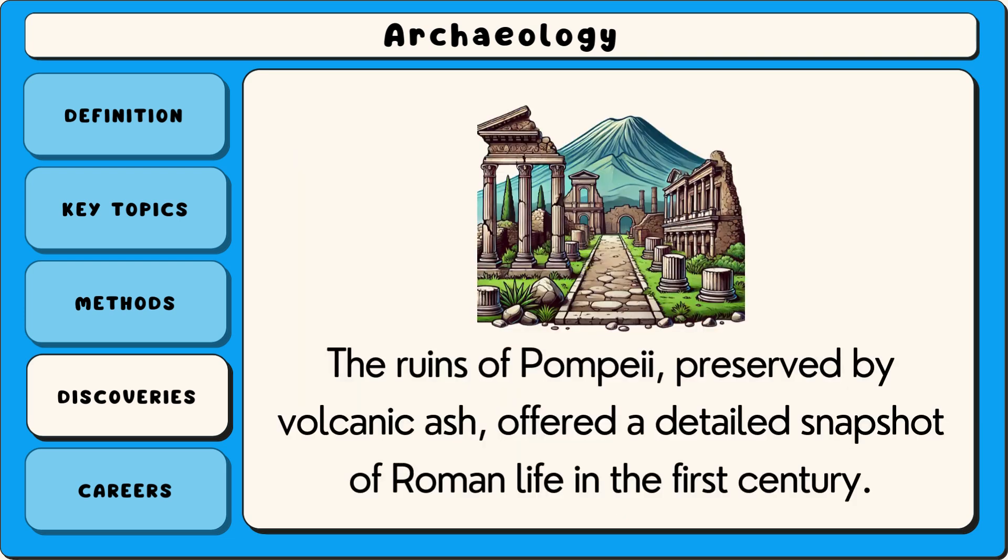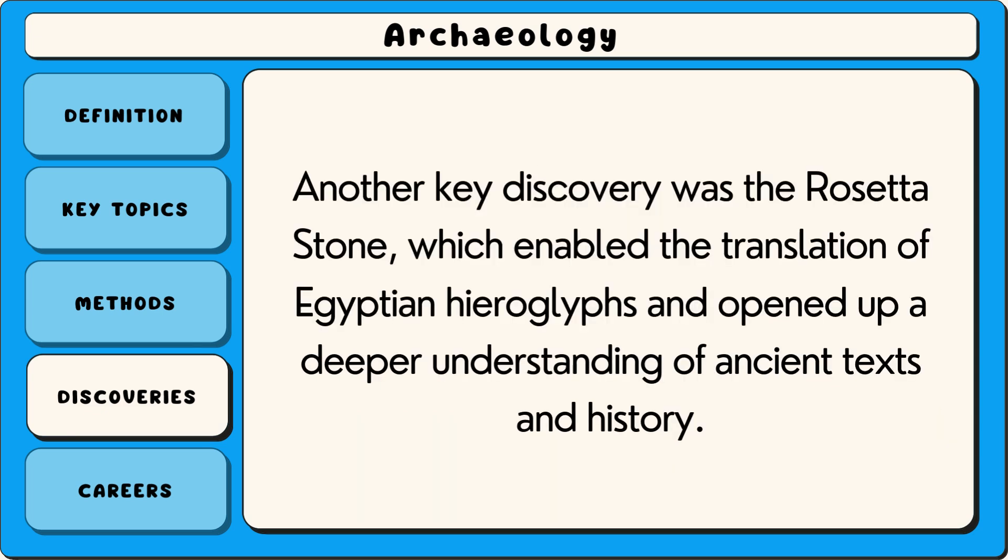The ruins of Pompeii preserved by volcanic ash offered a detailed snapshot of Roman life in the first century. Another key discovery was the Rosetta Stone which enabled the translation of Egyptian hieroglyphs and opened up a deeper understanding of ancient texts and history.